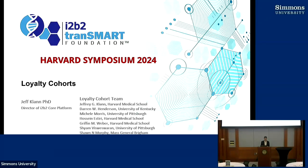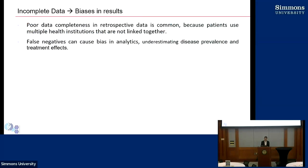I'm going to talk about loyalty cohorts. Computational phenotyping is an important thing to do with your data once you have a base cohort that you can work with. I'm going to talk about how you determine that base cohort. That base cohort is an important thing not just in developing computational phenotypes but in doing any kind of research study using EHR data, and the reason being data completeness.